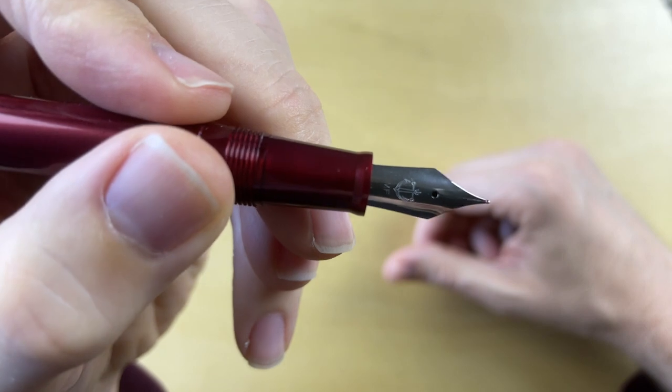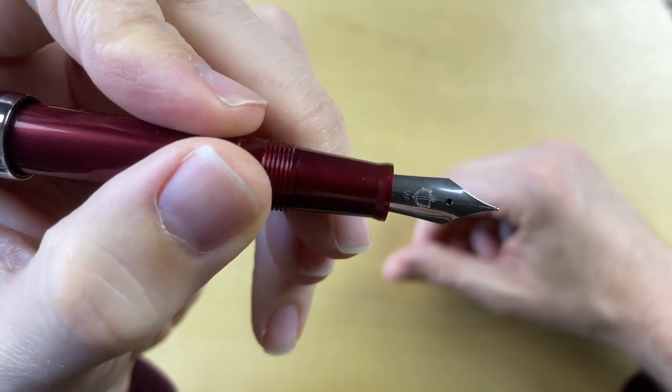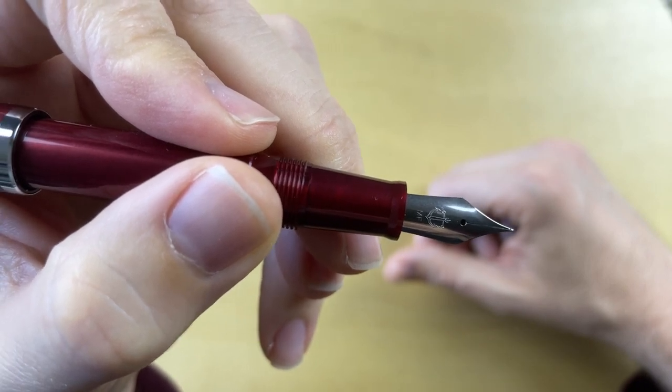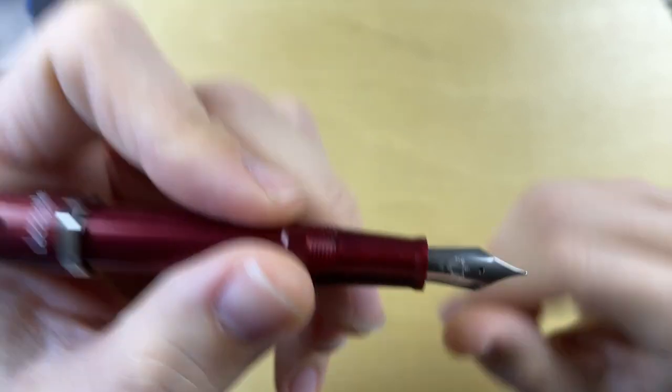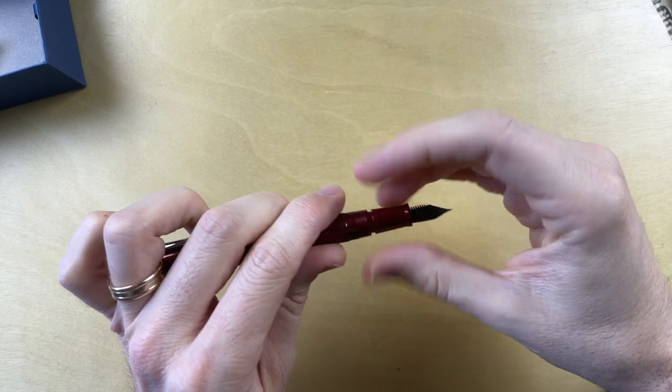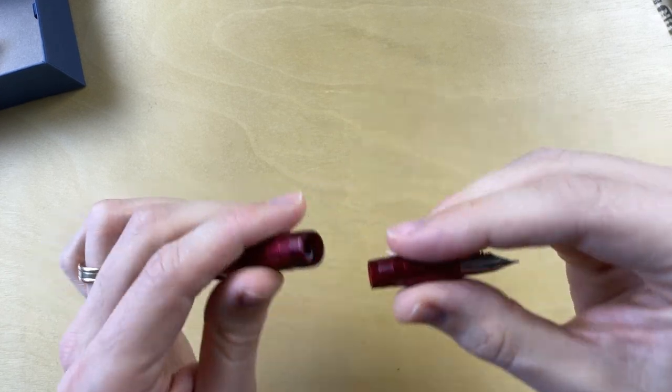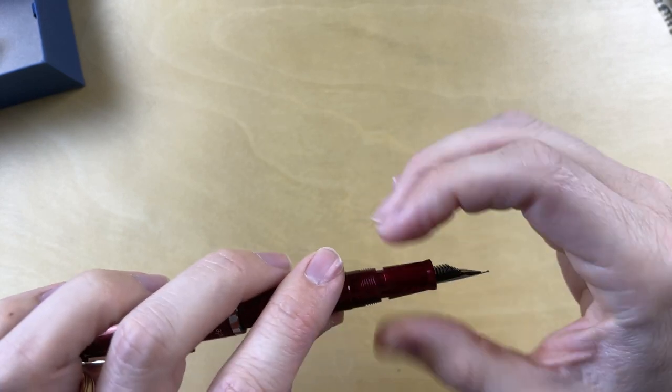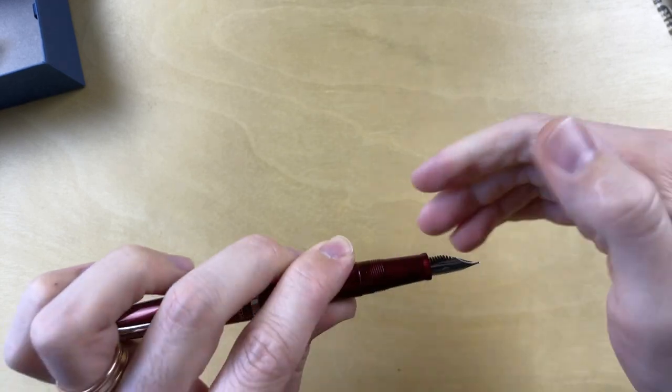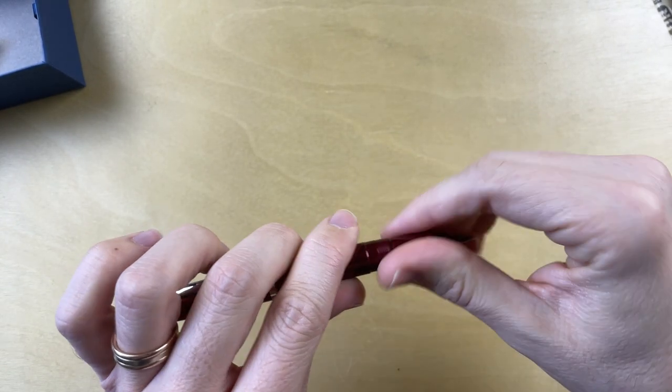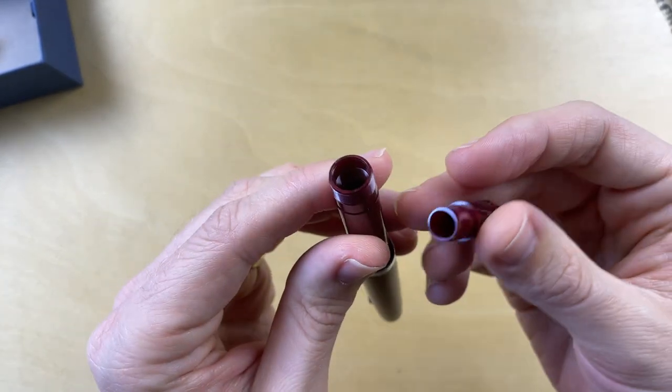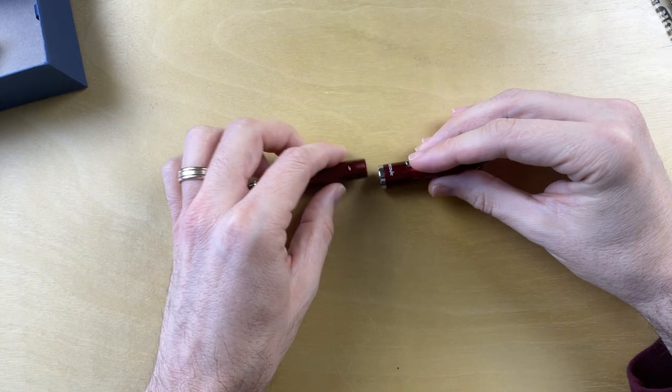There's a little Sailor action right there and it says MF for the nib. So that either means medium fine or it means that this nib needs to watch its language. I'm going to go with medium fine. When I open it up, it's got a little bit of a give right when you twist it closed. I thought there would be an O-ring in there, but there doesn't appear to be anything inside the barrel.